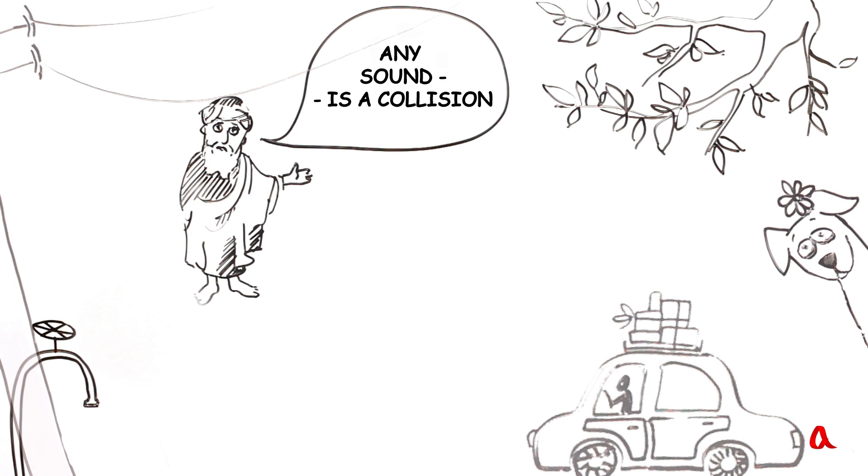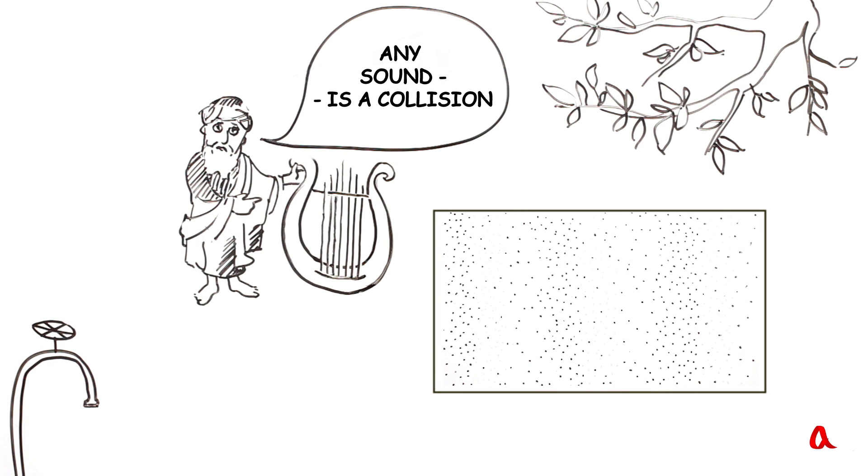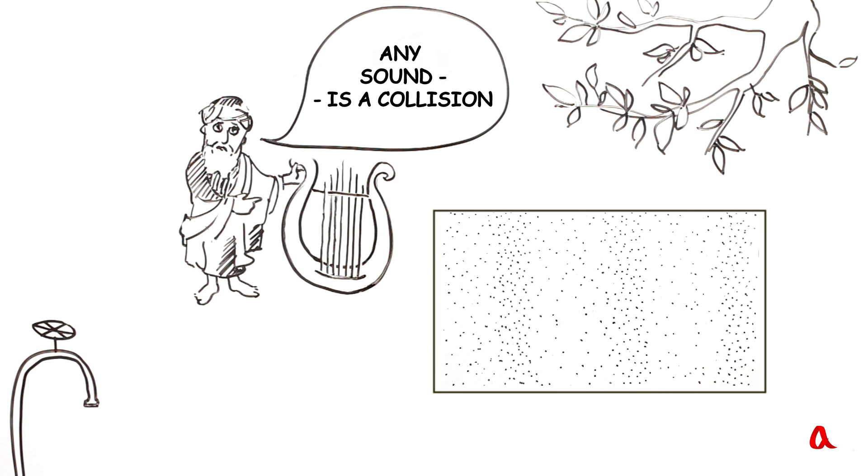Any sound is a collision. Here is a harp string. It vibrates and collides with the air. The air around the string is compressed and exhausted in turns, and the sound propagates in all directions, reaching our ears.